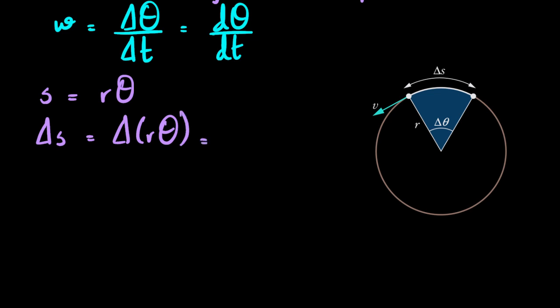As per this relationship s equals rθ, if I'm talking about this small angle and the small arc length that it produces, I can say that Δs would be Δrθ, the changes in r and θ. But if you're talking about a circle, we know it has a fixed radius, so the radius isn't going to change, so I can just write this as r·Δθ. Now if I try to link this with speeds, I would need to divide both sides of my equation by Δt.